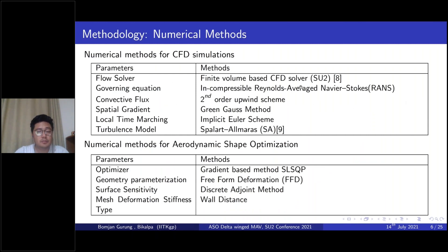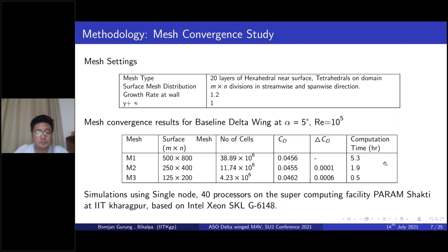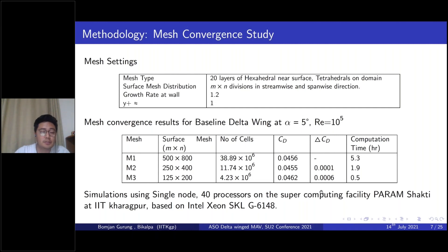The numerical methods used include RANS-based flow solver with a second-order upwind scheme. Gradient-based optimization was used, and the discrete adjoint method was used for sensitivity calculation. For the mesh convergence study, three meshes were used: M1, M2, and M3. M2 was used for all aerodynamic characterization, whereas M3, a slightly coarser mesh, was used for the optimization, considering the computation time per simulation. All simulations were done using a single node with 40 processors on the supercomputing facility Param Shakti at IIT Kharagpur.